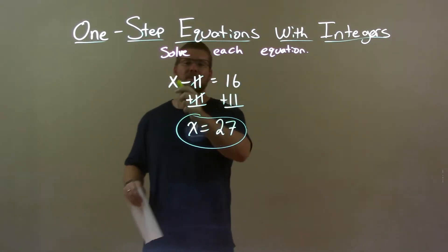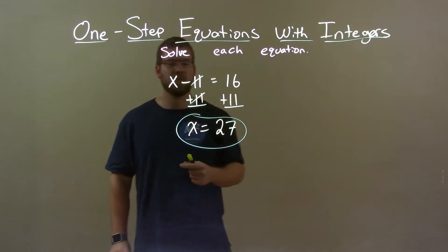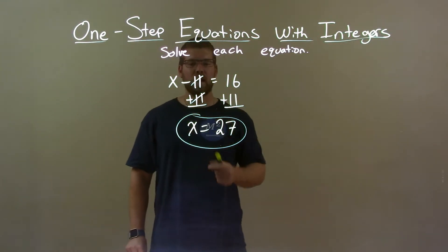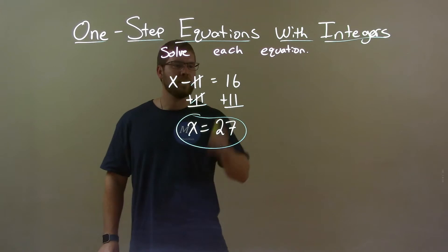Quick recap, we're given x minus 11 equals 16, and we have to solve for x. I add 11 to both sides. That gets me x by itself. 16 plus 11, 27. So again, final answer, x equals 27.